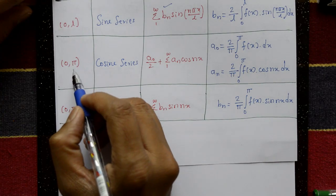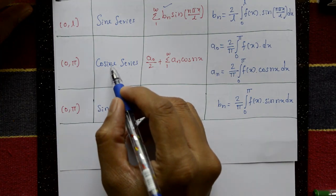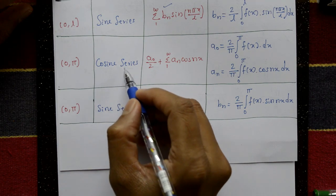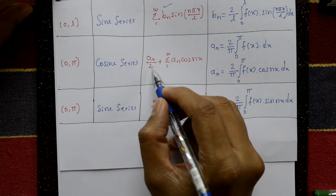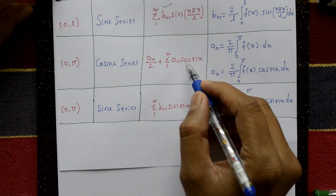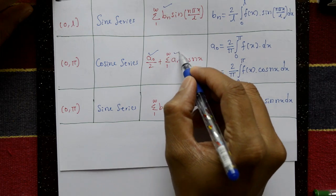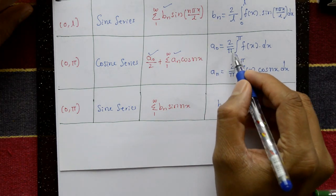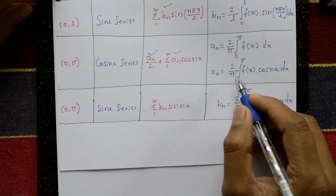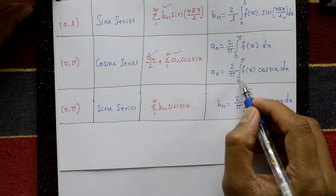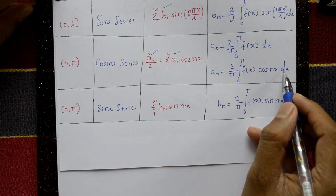The third case is when the interval is 0 to π and the required series is a cosine series. Then f(x) equals a₀/2 plus the summation from 1 to infinity of aₙ cos(nx), where a₀ = (2/π) ∫₀^π f(x) dx and aₙ = (2/π) ∫₀^π f(x) cos(nx) dx.